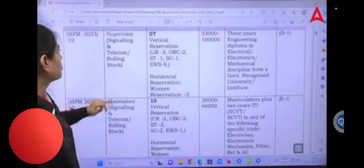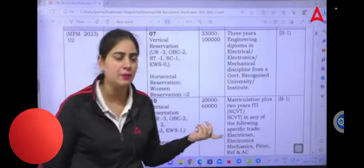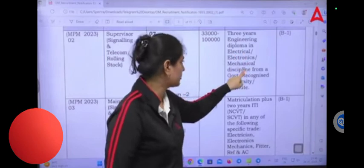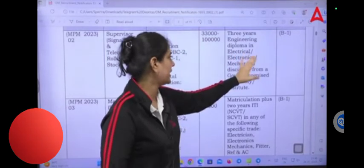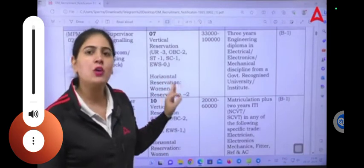The next post is Supervisor Signaling and Telecom Rolling Stock. There will be 7 posts with a salary of 30,000. In this, you have a three years engineering diploma in electrical, electronics, or mechanical. If you have a degree in electrical, electronics and mechanical engineering, then you can apply for this post.